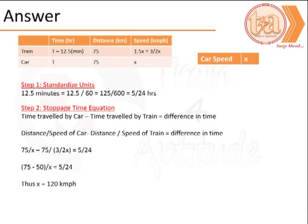We will need to ensure that the units of time is consistent. So we will convert 12.5 minutes to hours. We then begin with looking at an equation to find the difference in time between the time of travel of the car and time of travel of the train and substitute it with the distance by speed equations in each of the positions of the time and then solve to find X. The value is 120 km per hour.